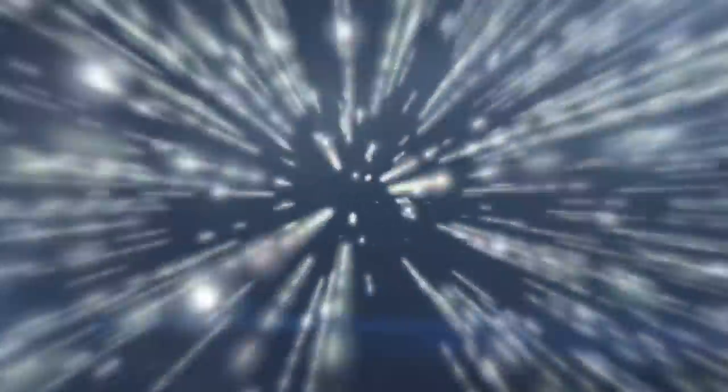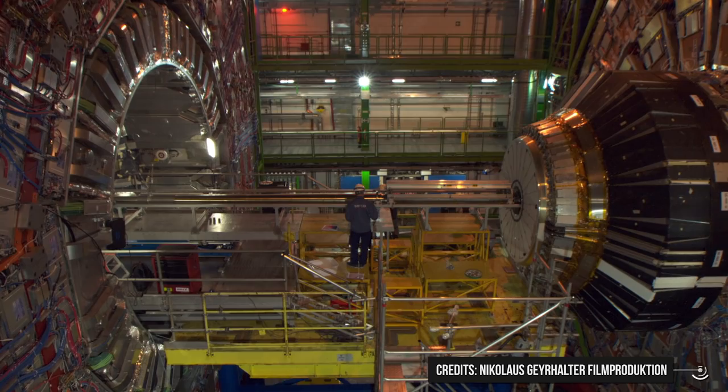When protons enter these cavities, an electric field is turned on, accelerating the particles in the desired direction. Each time protons enter a new RF cavity, they gain a bit more energy thanks to the electric field. Eventually, after they have completed thousands of revolutions and entered these cavities thousands of times, they reach a final speed which is almost the same as the speed of light. That's not enough, however, to make a collider.